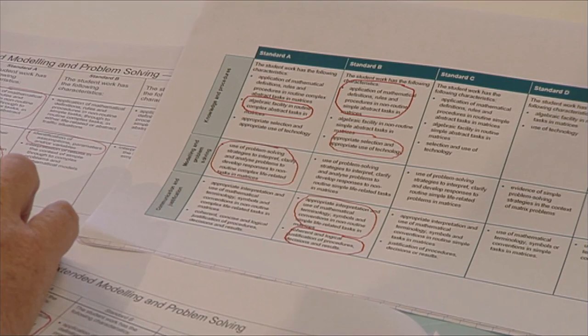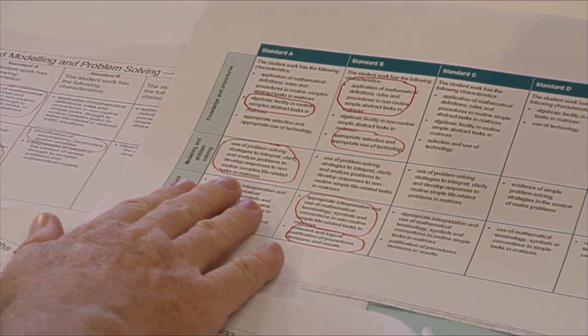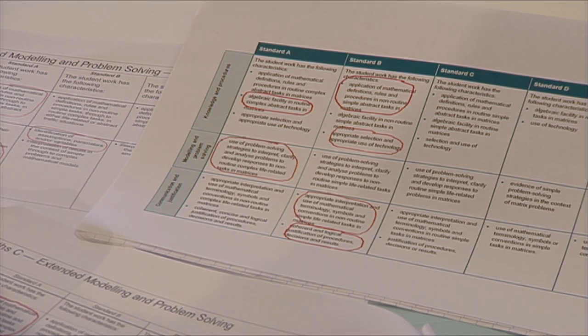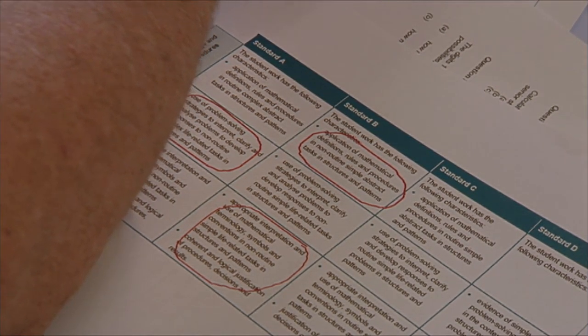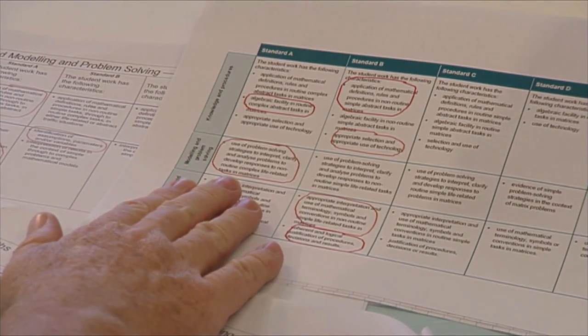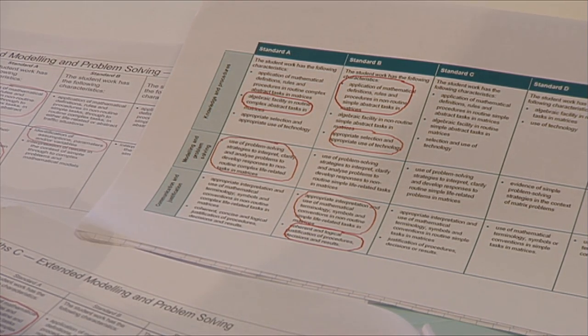This slightly stronger student has the same sort of area, but in knowledge and procedures there are some A's and B's — you could argue somewhere between an A and a B, but it's probably closer to a B. So in knowledge and procedures I'd be looking at a B. However, moving up into modelling and problem solving, the student's work has shown more consistently an A standard. Three of the instruments have shown an A standard, so I'd be happy with an A or A-minus in that particular area.